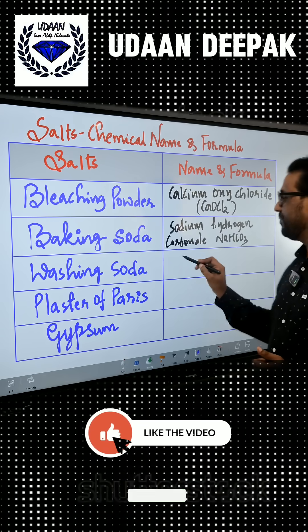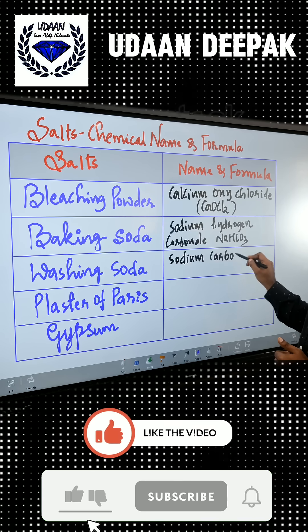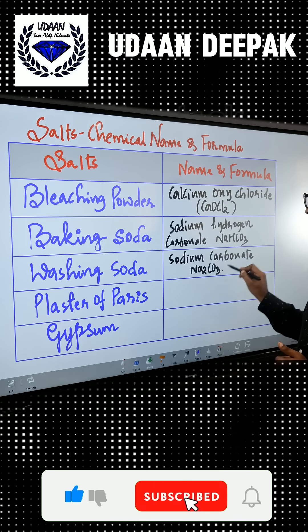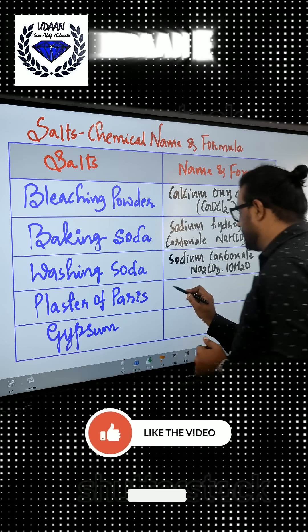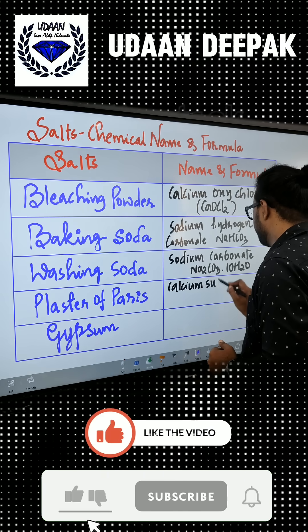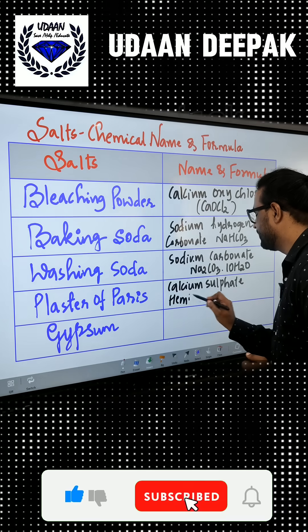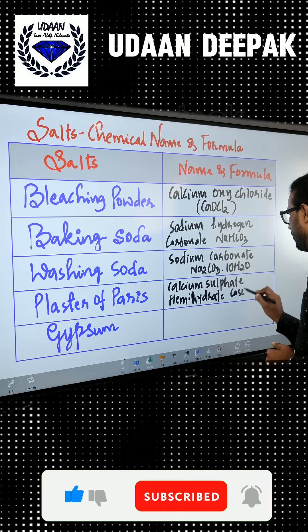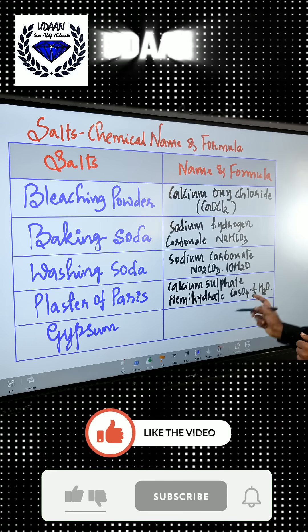Similarly, washing soda, that is sodium carbonate, Na2CO3·10H2O. Then POP, that is plaster of Paris — calcium sulphate hemihydrate, CaSO4·½H2O.